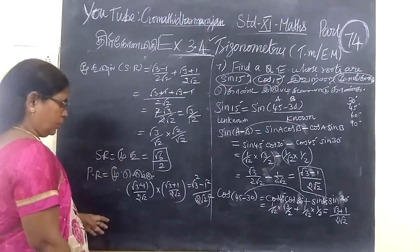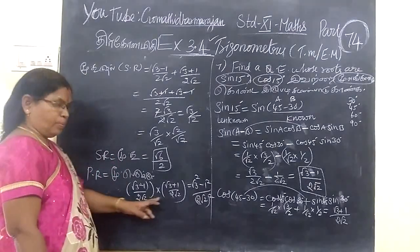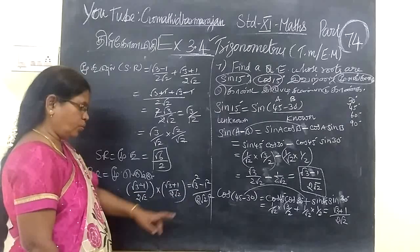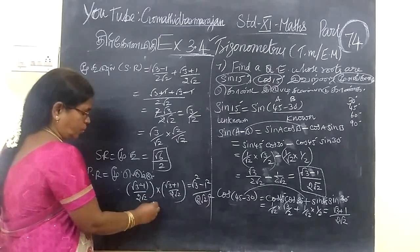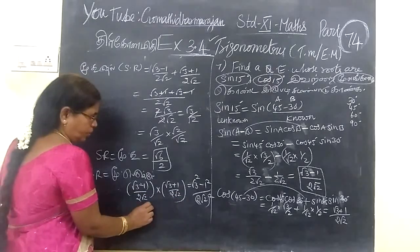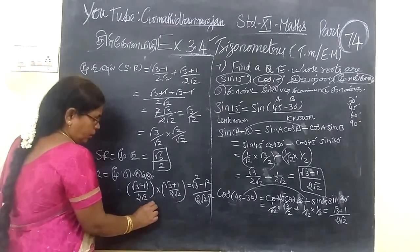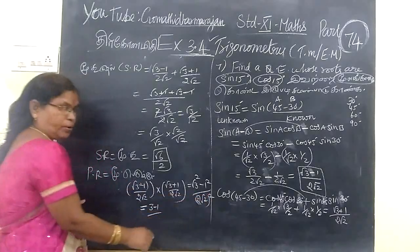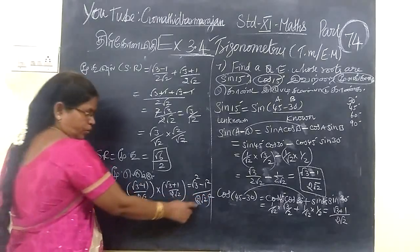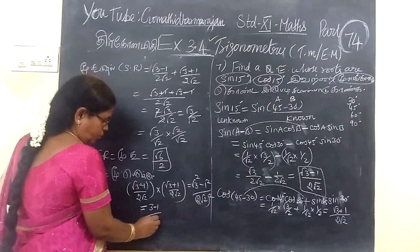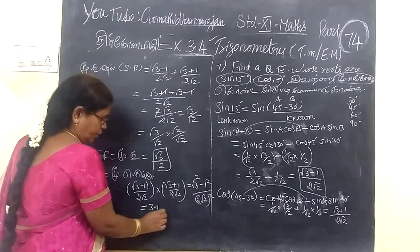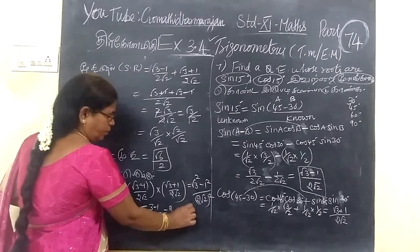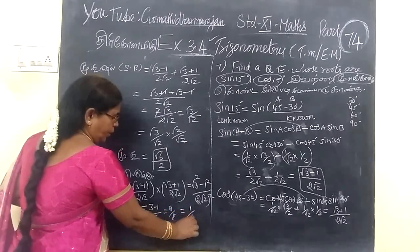This is the method. So it is equal to 3 minus 1 over 2 root 2 whole squared. 2 root 4 gives 4, root 2 times root 4 gives 2, so 4 times 2 gives 8. So we have 2 by 8, and cancelling gives 1 by 4.